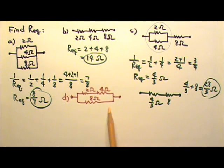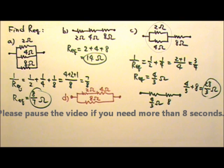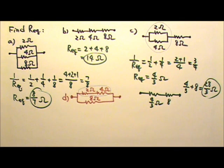How about part D. What is the equivalent resistance? For this one, we would first look at the 2 and 4 in series. And then together they are in parallel with the 8 ohms.